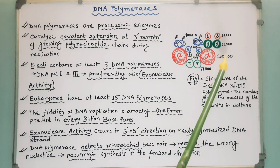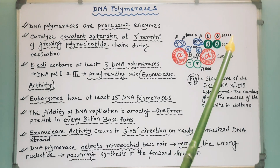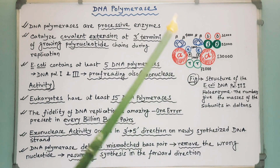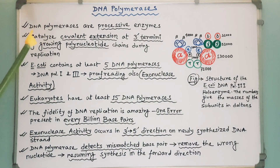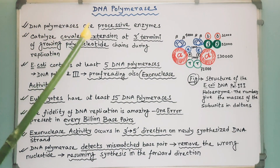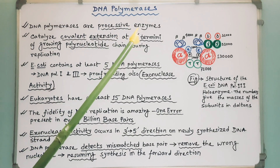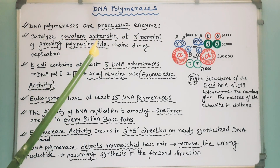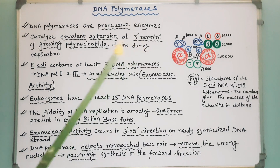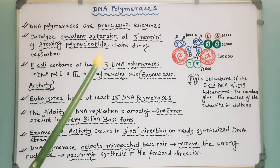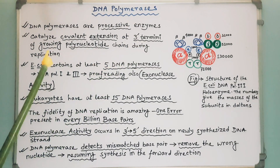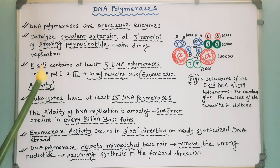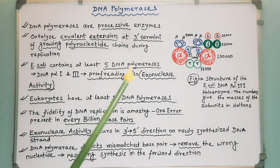The numbers give the masses of subunits in Daltons. We all know DNA polymerases are processive enzymes that catalyze the covalent extension at the 3' termini of growing polynucleotide chains during replication. E. coli contains at least 5 DNA polymerases.